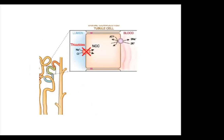The distal tubule comprises the distal convoluted tubule and the connecting tubule, where significant sodium and calcium reabsorption occurs. After this, the collecting tubule is encountered; both cortical and medullary collecting tubules handle transport of sodium via principal cells, acid loads via intercalated cells, and potassium via both cell types. In the medullary collecting tubule, ADH-regulated control of water and urea permeability allows concentration of urine to a much greater level than plasma.